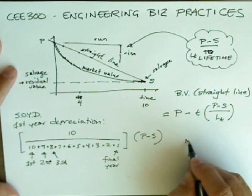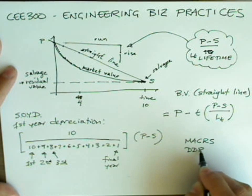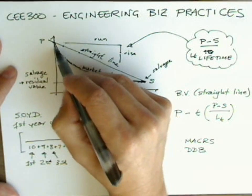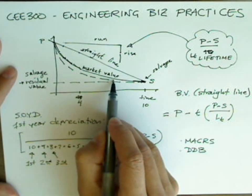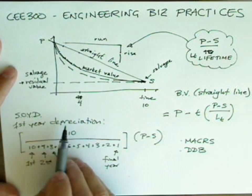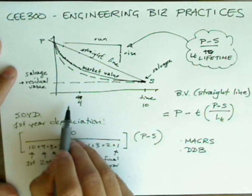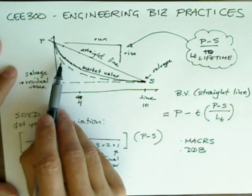There's also the modified accelerated cost recovery system, the double declining balance system. All of these methods are intended to find some approximation of this curve of linear depreciation that the Internal Revenue Service will allow, so that businesses can avoid paying taxes too soon.